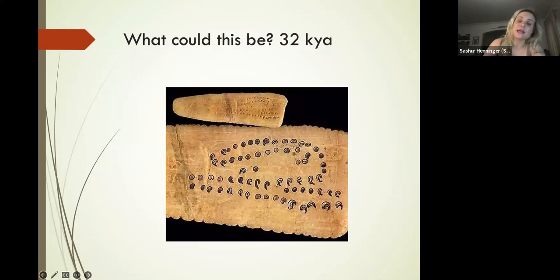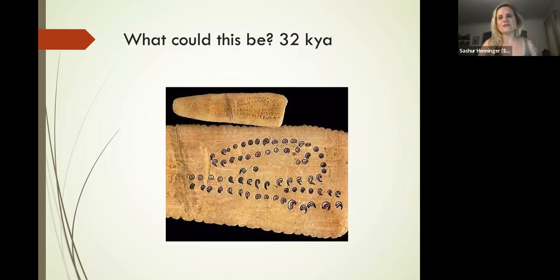Why would we have done that? Why would humans start keeping track of days? The archaeological evidence puts the development of agriculture somewhere between 10 and 15,000 years ago, but I think it probably happened much earlier than that. A calendar like this would help keep track of seasons.